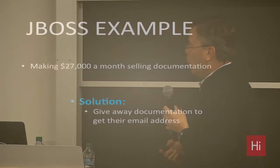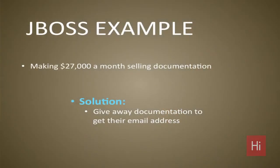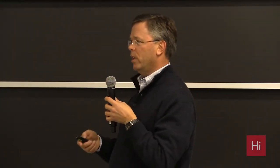What we did with JBoss was straightforward: we took the documentation they were selling for $27,000 and — after three months of arguing — gave it away free. It turned on a lead flow of 10,000 leads per month, which created another problem in that it was too many leads for salespeople to handle, but it basically fueled the whole business from that point forward. The documentation was an adequate motivation to overcome the concern about spam.